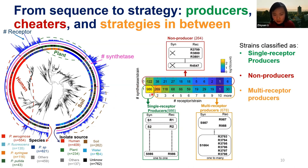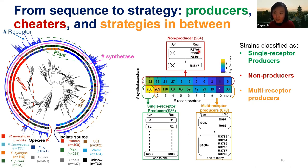The first type, which we nickname 'honest strains', have one synthetase and exactly one receptor — single receptor producers. They produce one siderophore and eat one. Then there are classical cheaters: they have no synthetases anywhere in the genome but have receptors, so they are ready to eat siderophores made by others since siderophores are so expensive to make. About 800 strains are multi-receptor producers.